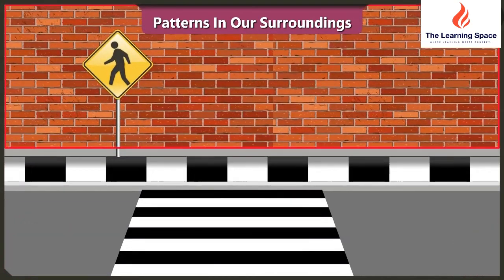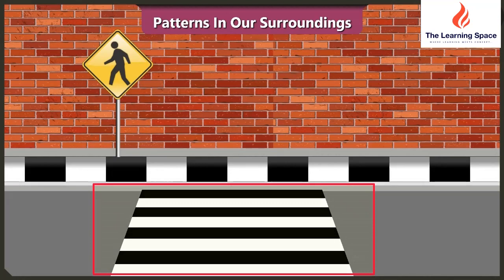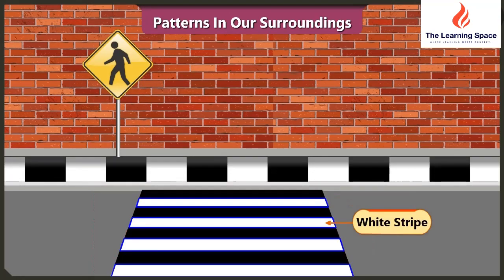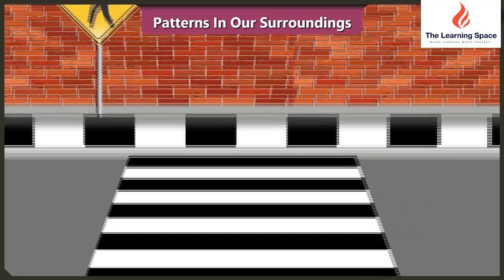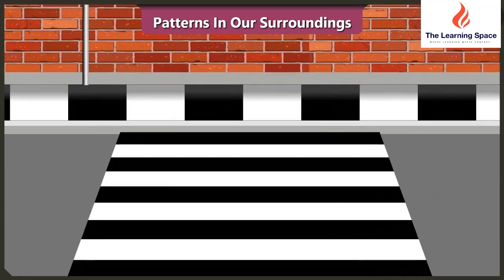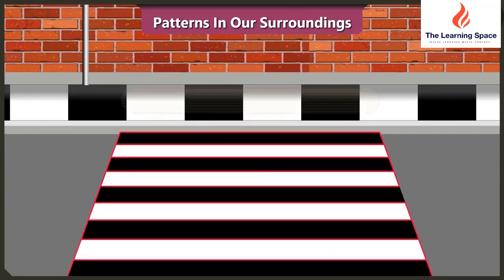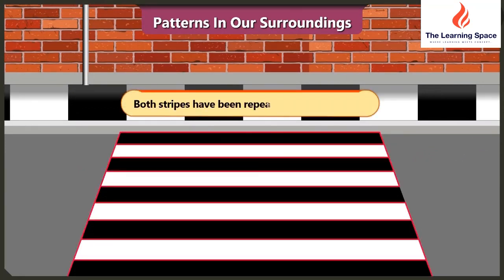Vinny, look at this wall. This wall has a pattern made of bricks. Now look, this zebra crossing has a pattern of black and white stripes. This pattern has black, white, black, white lines — both black and white color lines have been used repeatedly.